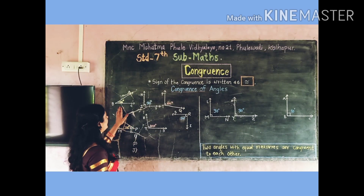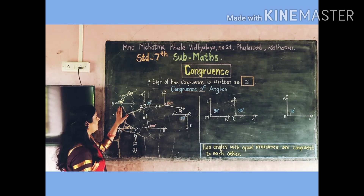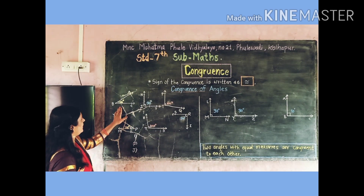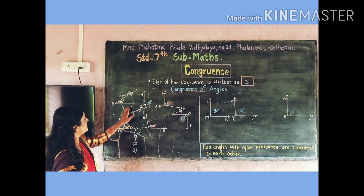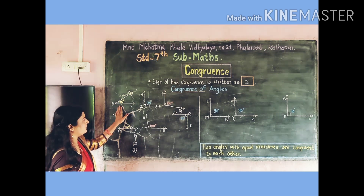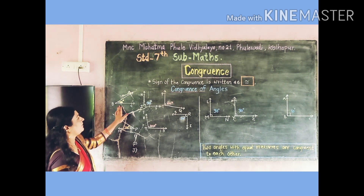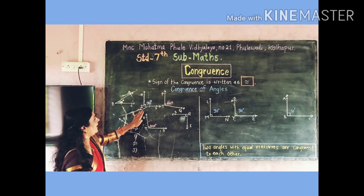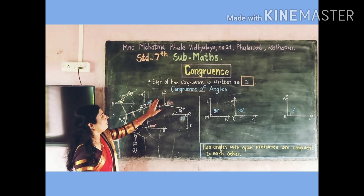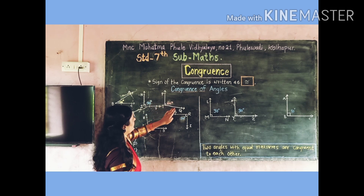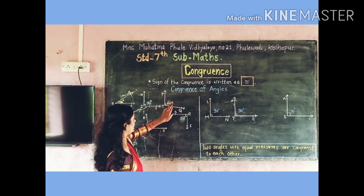I read here the names and measurements of the angles. Measurement of angle ABC is equal to 35 degrees. Measurement of angle NIT is equal to 90 degrees. Measurement of angle PTQ is equal to 100 degrees.